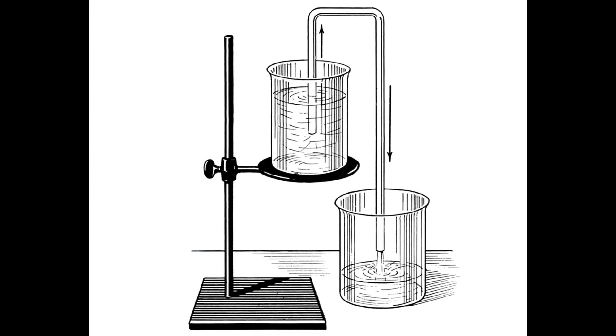A siphon works because gravity is pulling down on the taller column of liquid, leaving reduced pressure at the top of that tube. As the liquid leaves the longer tube, the reduced pressure pulls liquid from the reservoir up to take its place. This theory relies upon the cohesion of the particles of the liquid, which means a continuous chain of cohesive bonds must exist in the liquid.